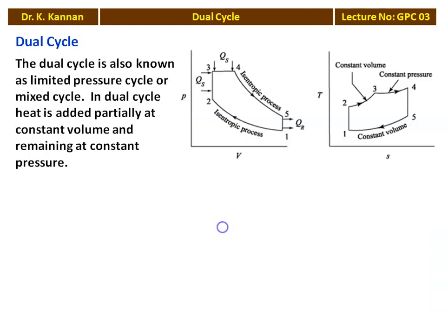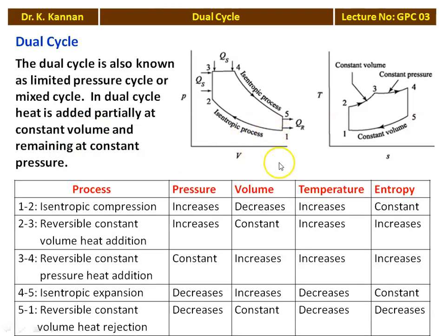The dual cycle — this is the PV and temperature-entropy diagram of the dual cycle. The dual cycle is also known as the limited pressure cycle or mixed cycle. In the dual cycle, heat is added partially at constant volume and the remaining at constant pressure. There are 5 processes: 1-2 isentropic compression, 2-3 constant volume heat addition, 3-4 constant pressure heat addition, 4-5 isentropic expansion, and 5-1 constant volume heat rejection.